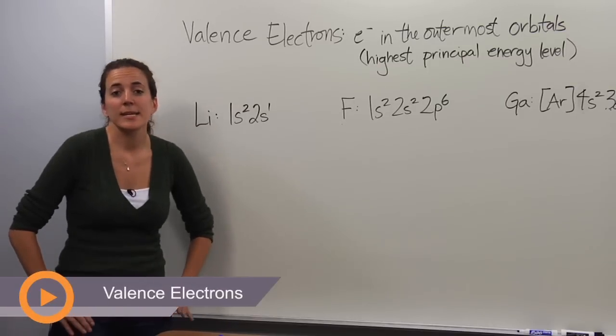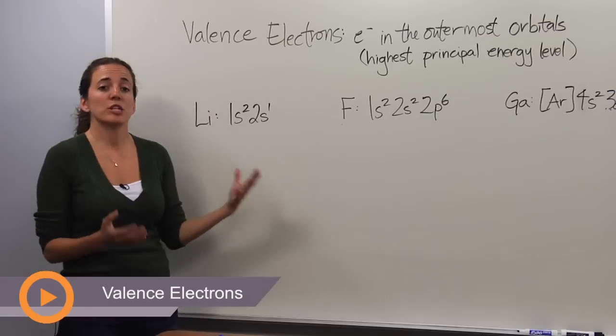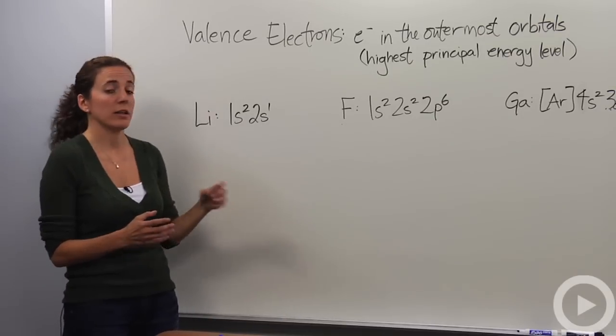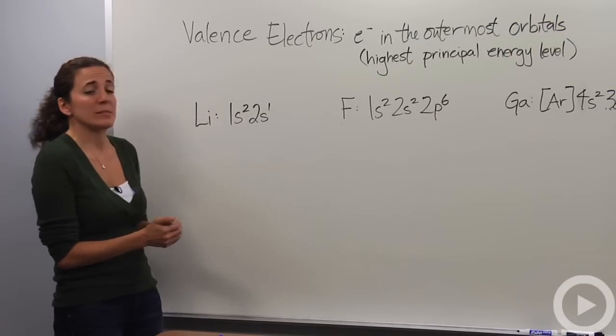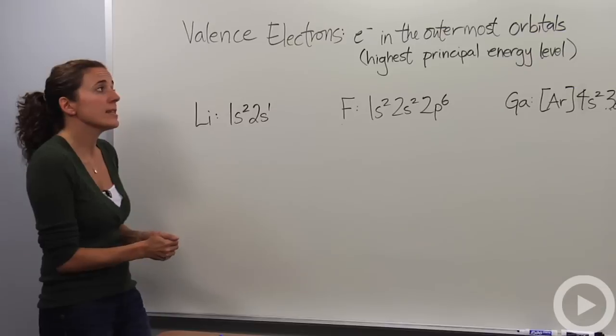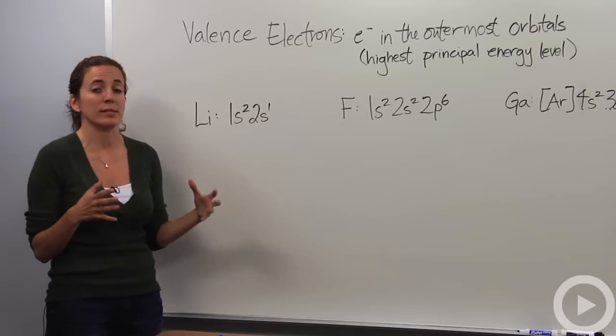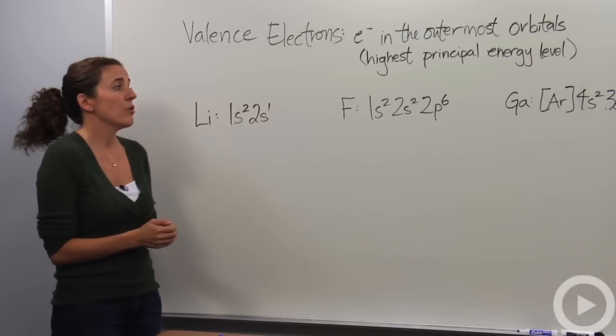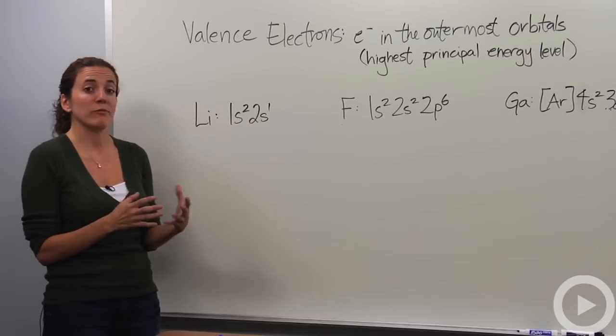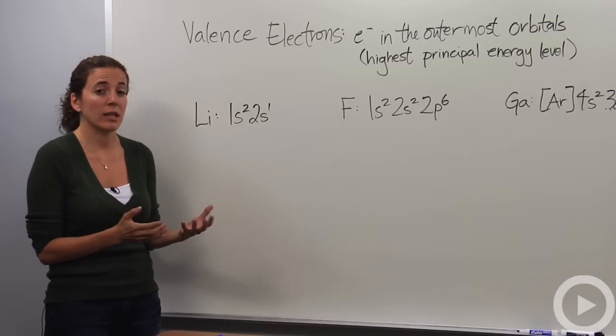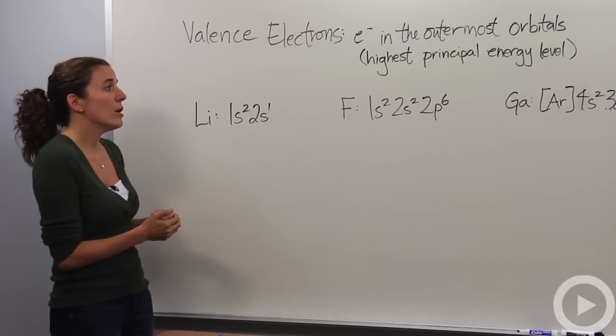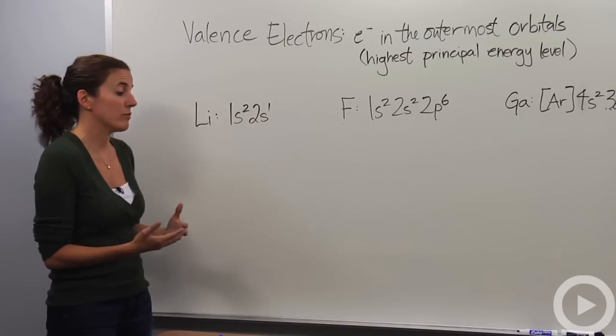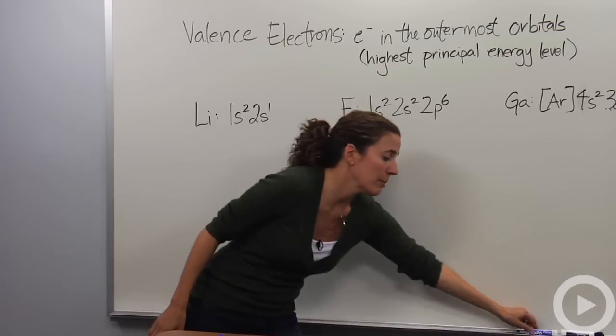We're going to talk about valence electrons. We know electrons are the negatively charged particles in an atom, they're the ones surrounding the nucleus, but we're going to talk more specifically about valence electrons. Valence electrons are electrons in the outermost orbitals, the highest principal energy level. They're the ones that are actually responsible for bonding, the chemical properties of each element. They're the ones we're actually going to be using much more often as we go on.